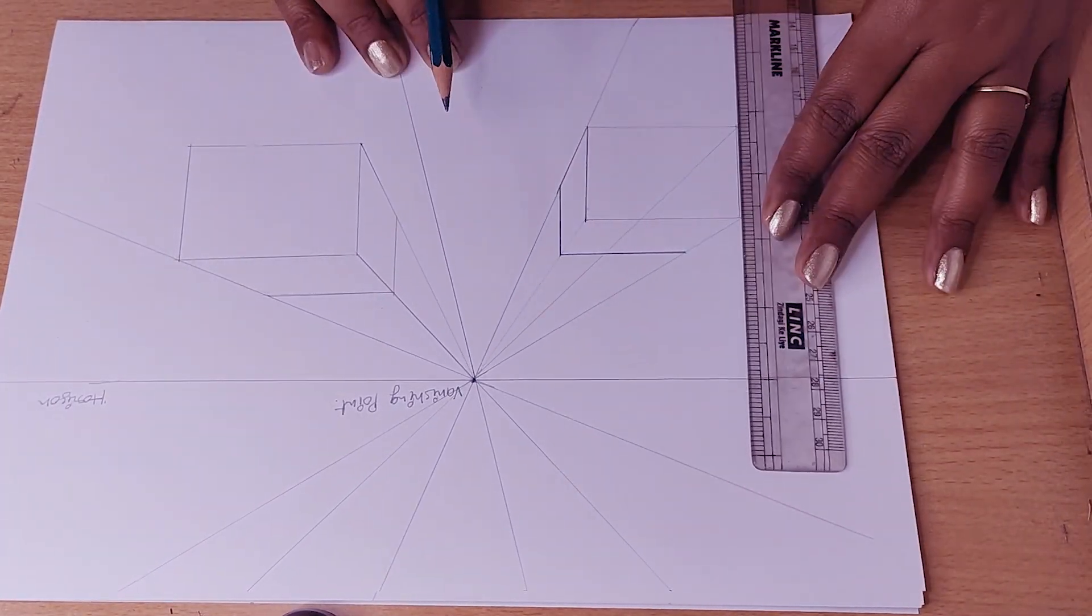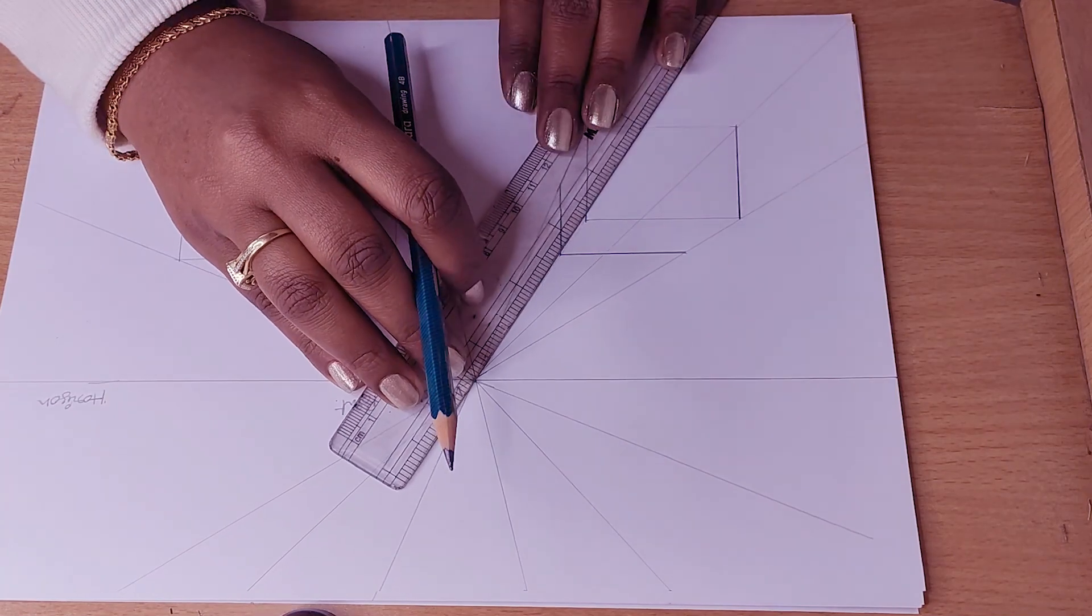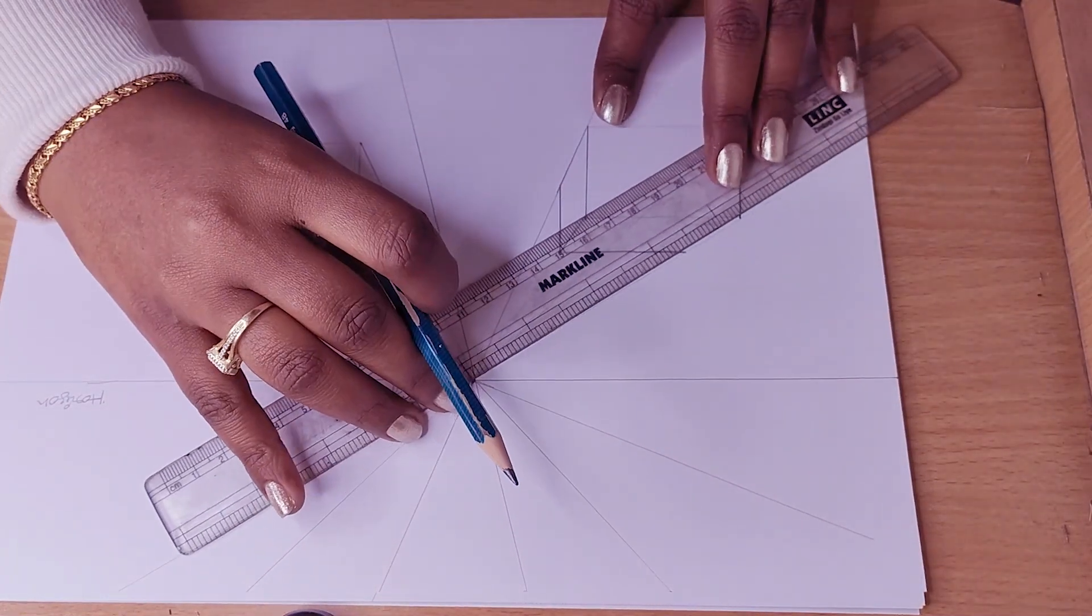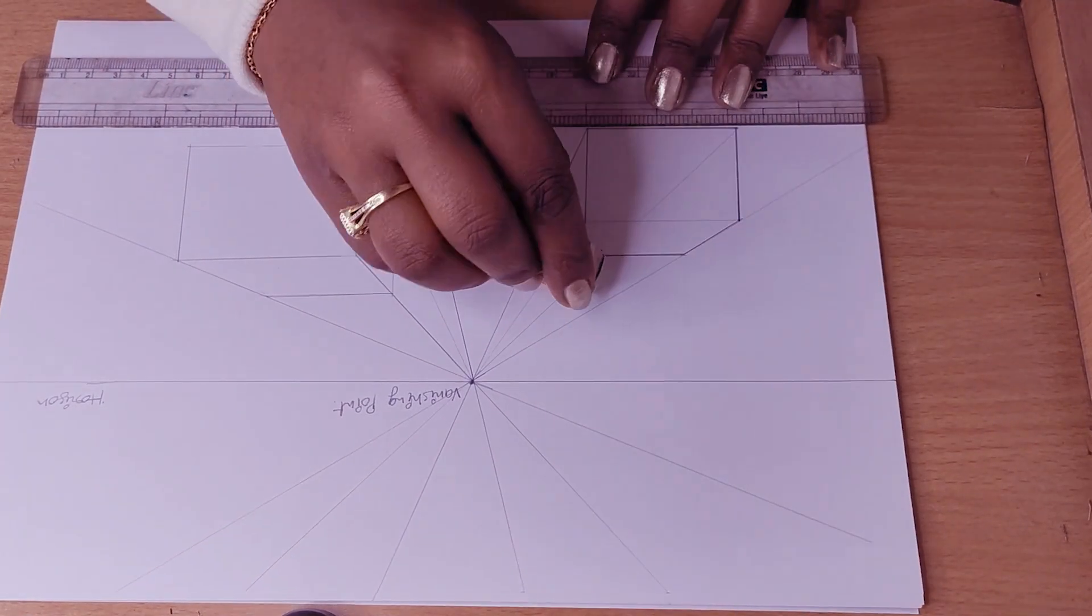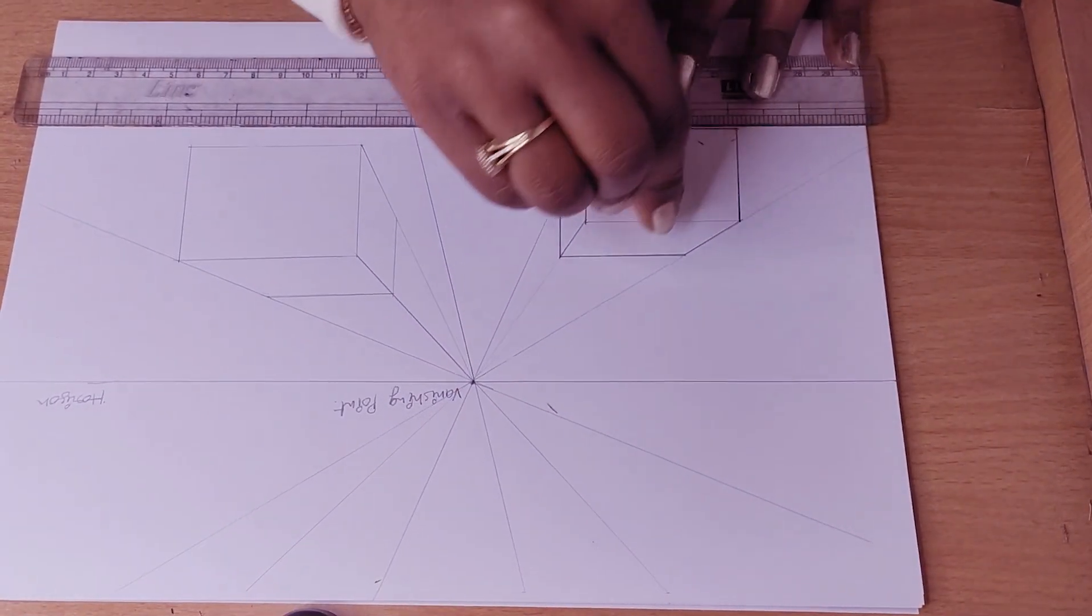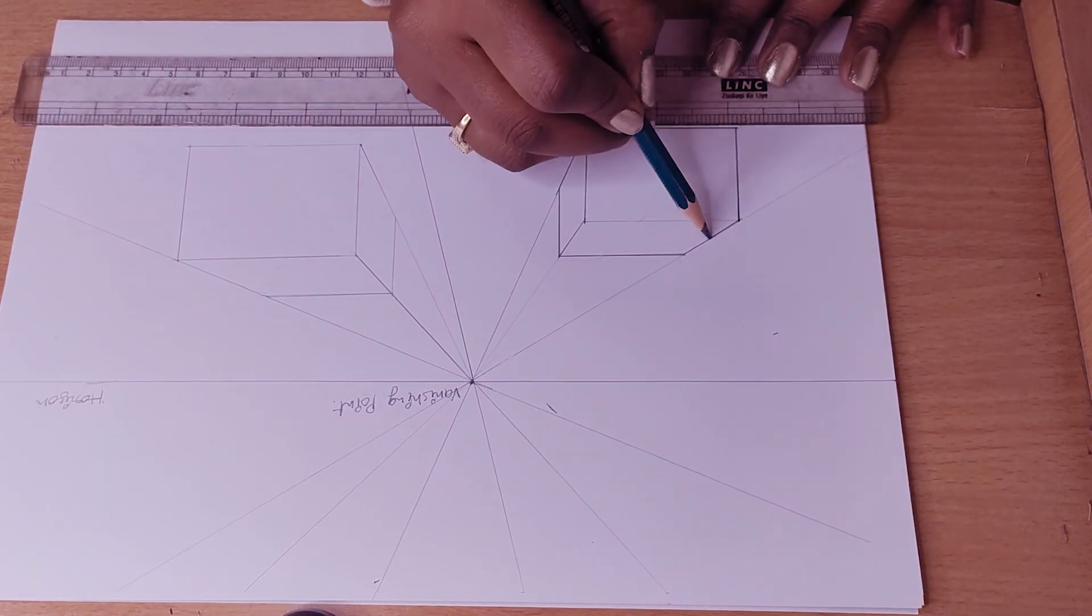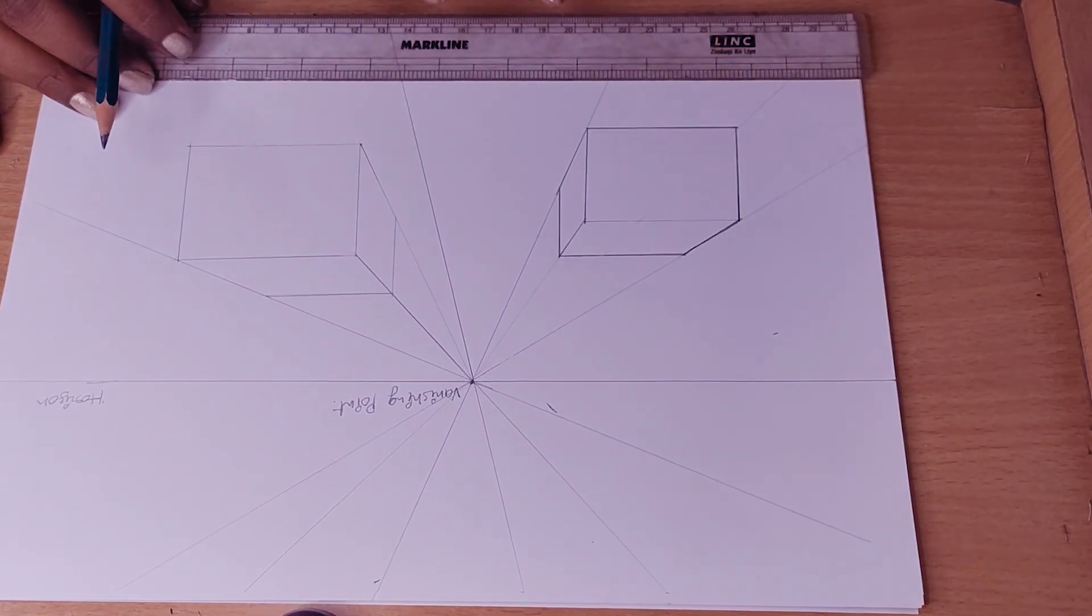After watching this video, you can draw very easily one-point perspective. One-point perspective is basically used in making drawings of roads, buildings, stairs, etc.